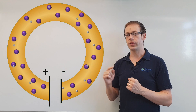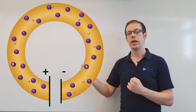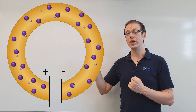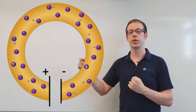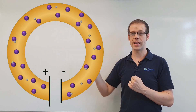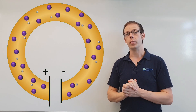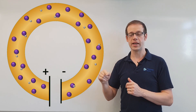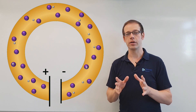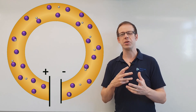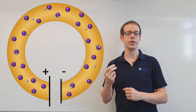We know now that electrons go from negative to positive; however, we say that conventional current goes from positive to negative. So when we're talking about current flow, we say that it goes from positive to negative. This might seem enormously confusing, so let's try to resolve it by means of an analogy.